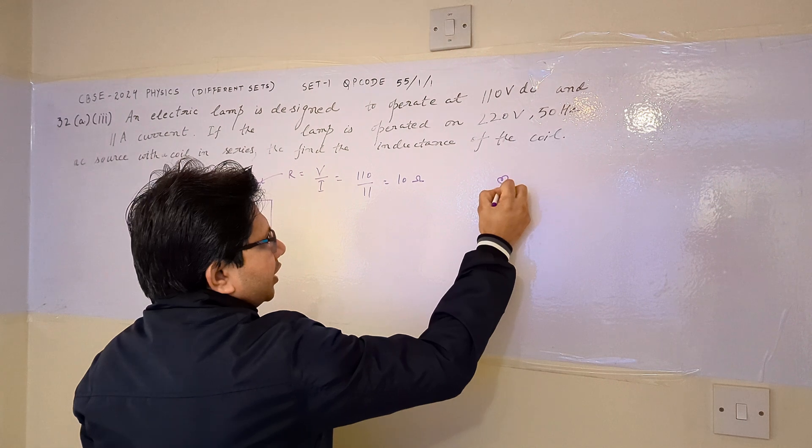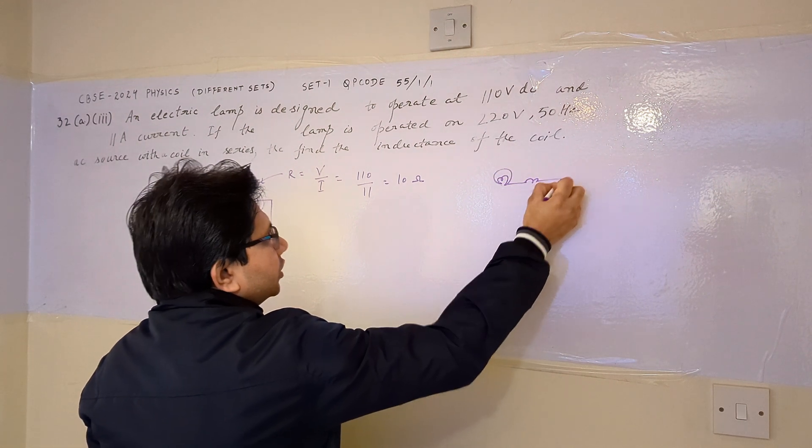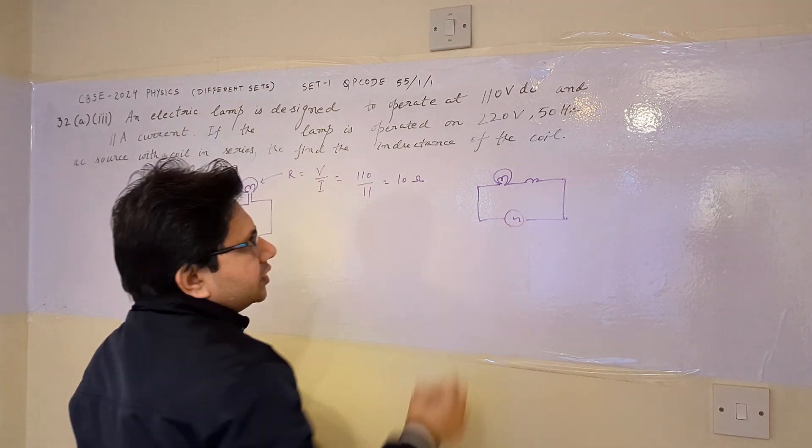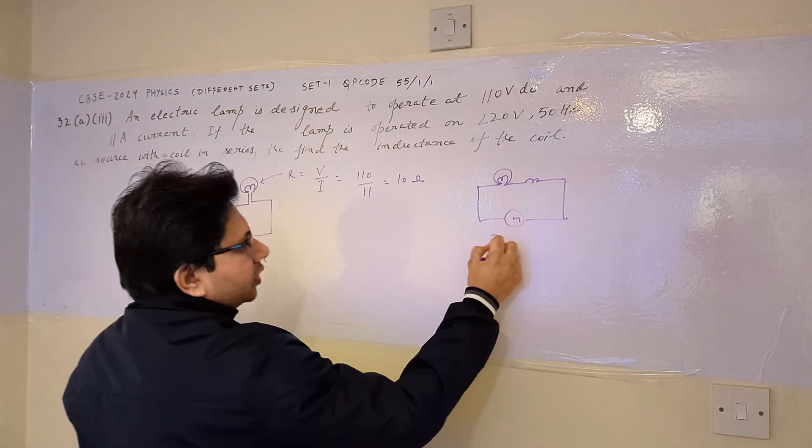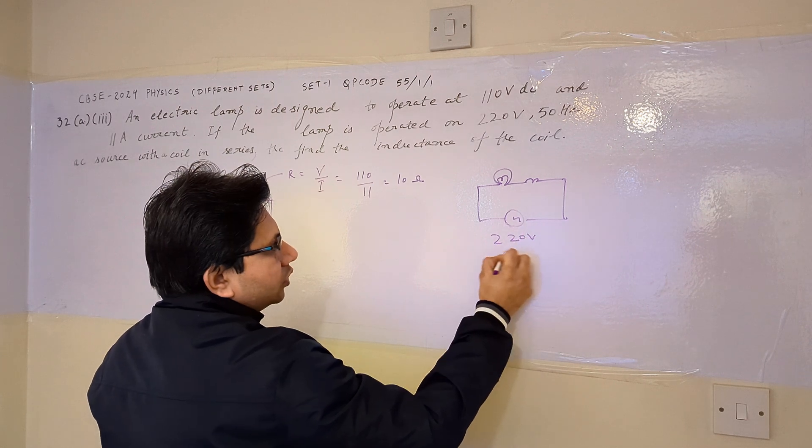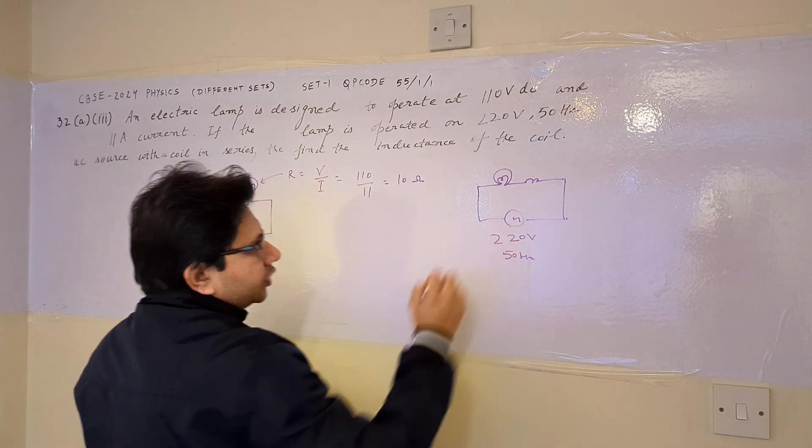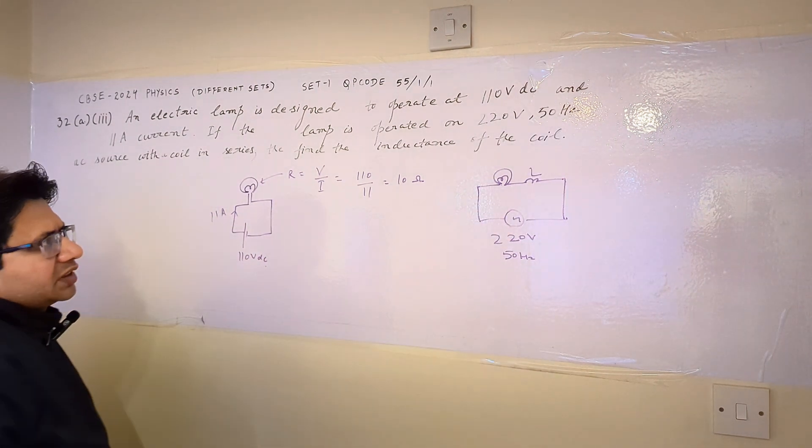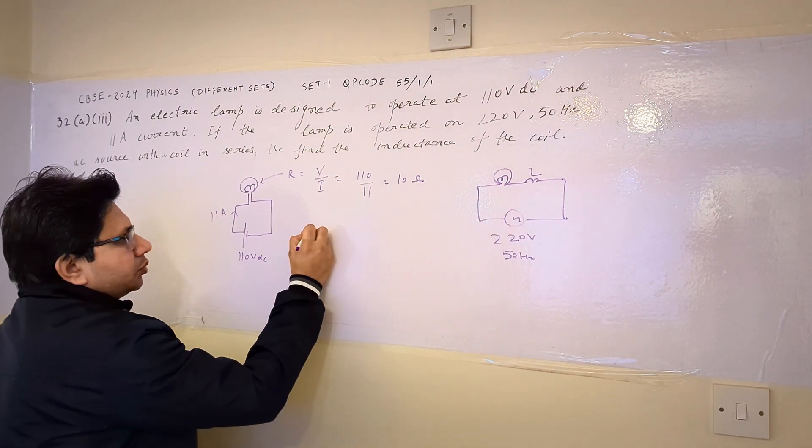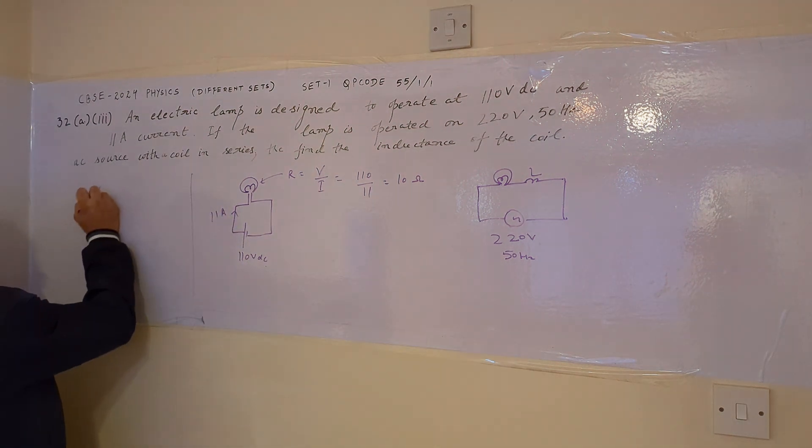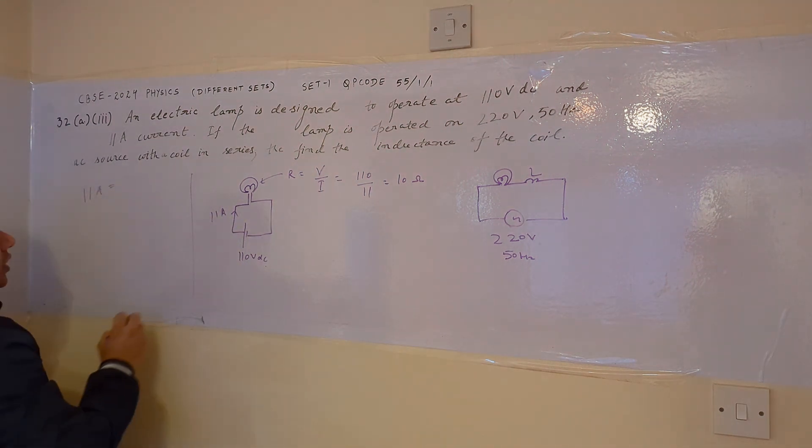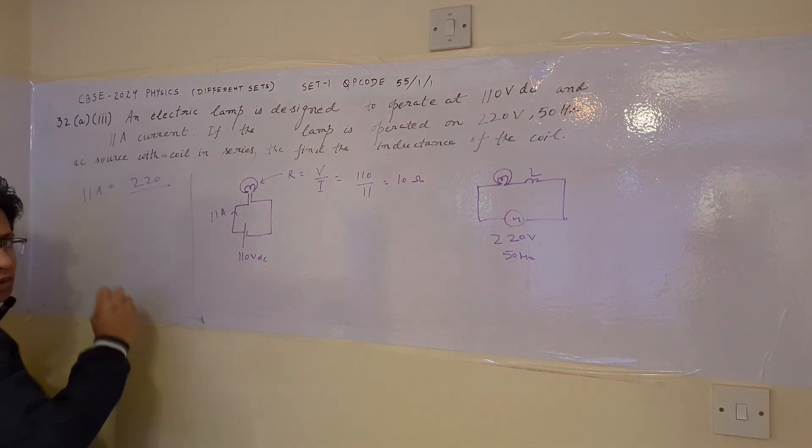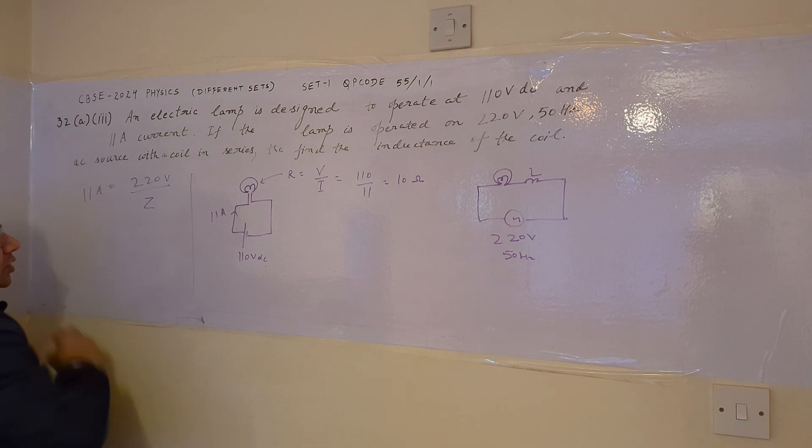Now this bulb or lamp is operated in series with a coil or an inductor and placed across an AC signal. This AC signal is having a voltage of 220 volt and a frequency of 50 hertz. Now we have to find out the inductance of this coil. In this situation, when the current passing through this AC circuit is 11 ampere, this current equals the applied voltage, the total applied voltage RMS value of 220 volts upon the impedance Z.